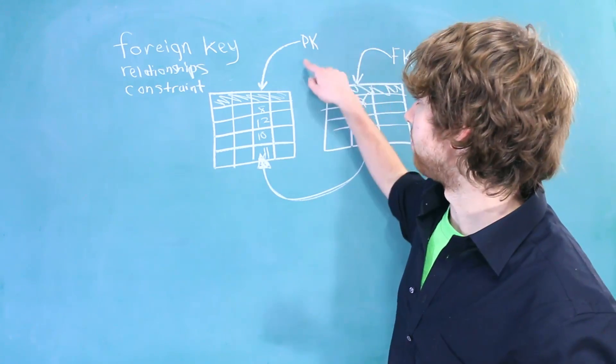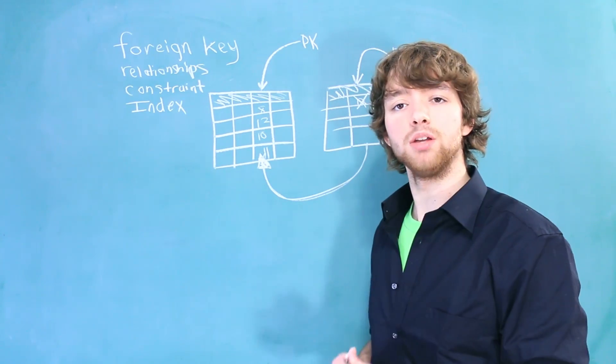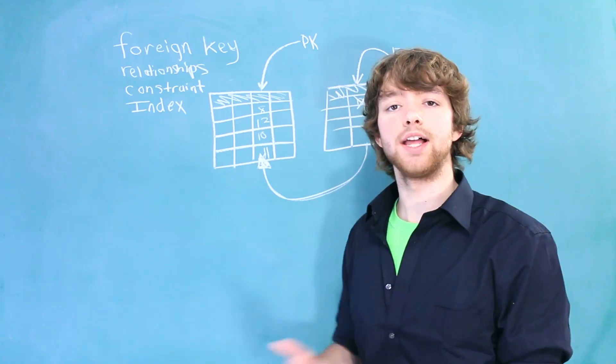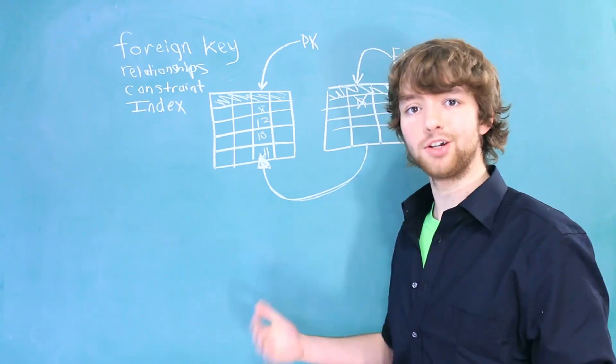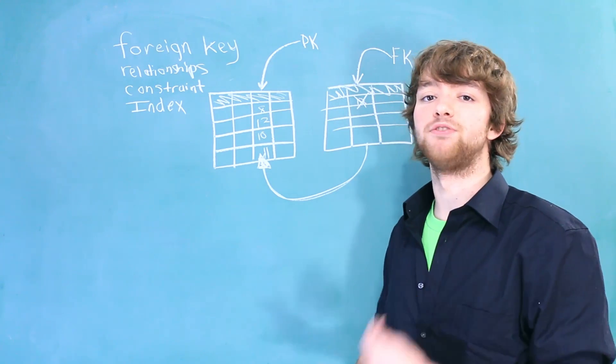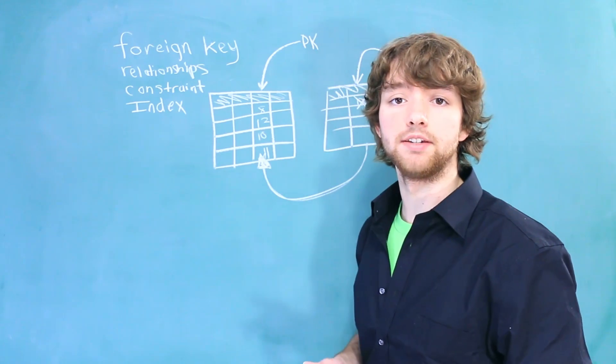Now, when you create a primary key, it's automatically indexed. When a column is indexed, we can select data and use that column much faster. Literally, just think of like an index in a book. It helps you find information much faster. Primary keys are automatically indexed.